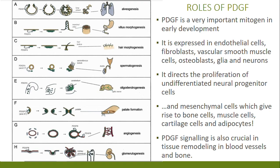It directs the proliferation of undifferentiated neural progenitor cells and mesenchymal cells, which are multipotent cells that give rise to bone cells, muscle cells, cartilage cells, and fat cells. PDGF is very important in alveogenesis, spermatogenesis, oligodendrogenesis, platelet formation, and formation of blood vessels. As you can see, you would not be who you are today without the function of this small dimeric molecule.